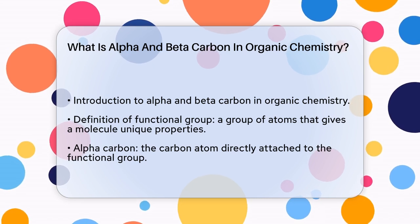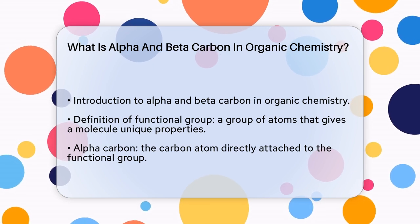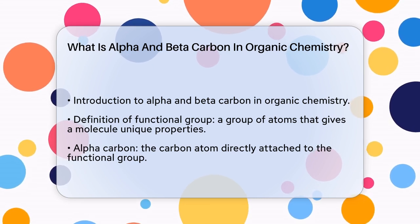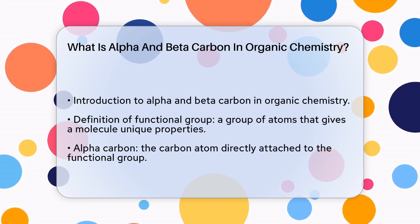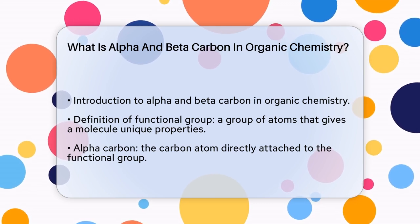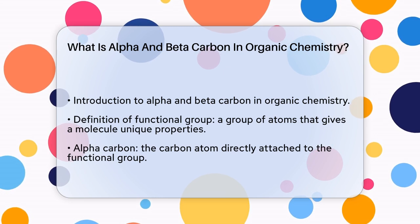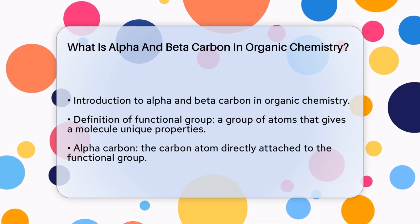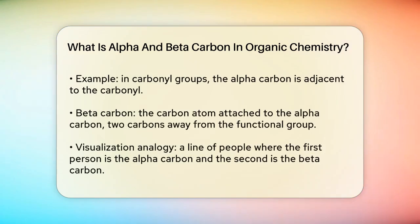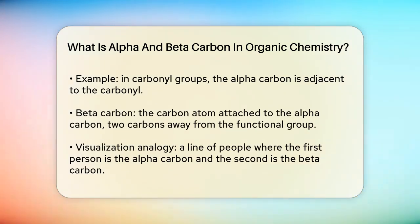To find the alpha carbon, you need to identify the functional group first. The alpha carbon is the carbon atom that is directly attached to this functional group. For example, in a molecule with a carbonyl group, like in aldehydes, ketones, or carboxylic acids, the alpha carbon is the carbon right next to the carbonyl group.